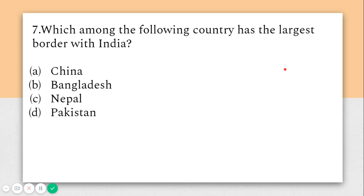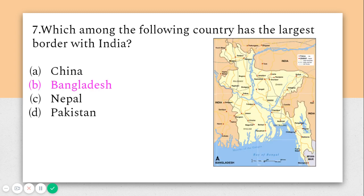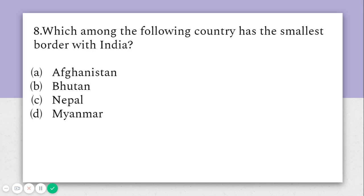The seventh question asks: which among the following countries has the largest border with India? Many people might think it is China or Pakistan, but the correct answer is Bangladesh. As you can see in the figure, the border line is very long because it is curved at many points, which is why India has its largest border with Bangladesh.